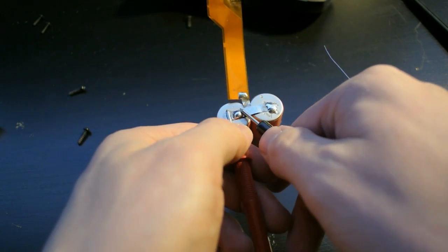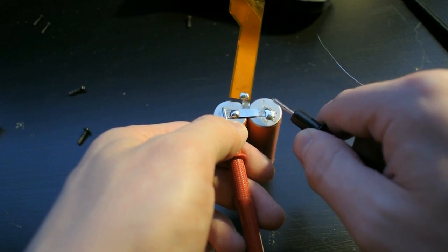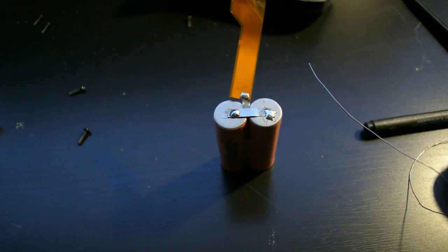Now since these cells are joined in parallel and the ones in the drill are joined in series we're going to have to detach these cells from each other and then re-solder them to be in series.